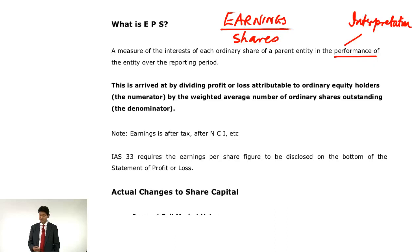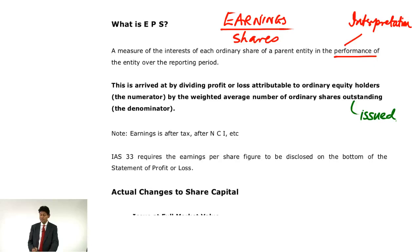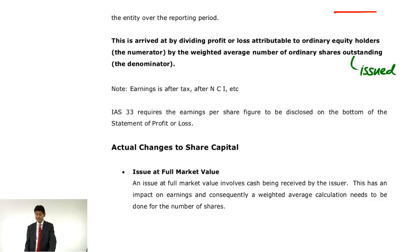The formula is: Earnings — which means profit after tax — divided by the number of shares. Not share capital, but the number of shares. Earnings Per Share is arrived at by dividing profit or loss attributable to ordinary equity shareholders by the weighted average number of shares outstanding. Note: earnings is after tax, after non-controlling interests (NCIs) if you get a group situation. And IAS requires you to show EPS at the end of the P&L.